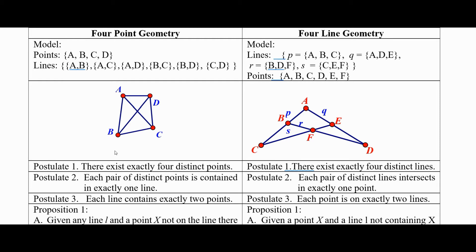Each pair of distinct points is contained in exactly one line. Well, the way that translates over here in the dual geometry is the points become lines and the line becomes a point.